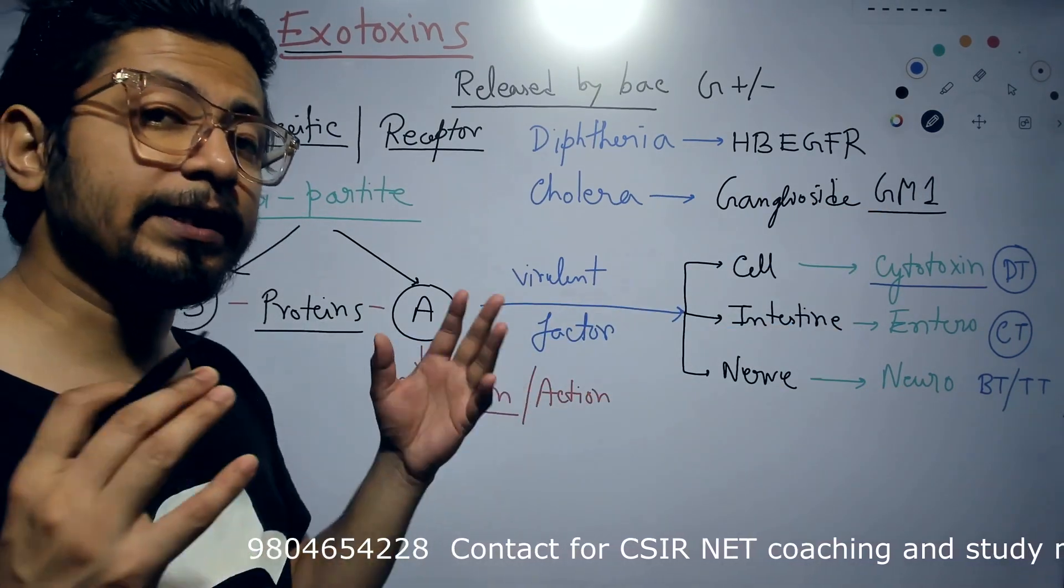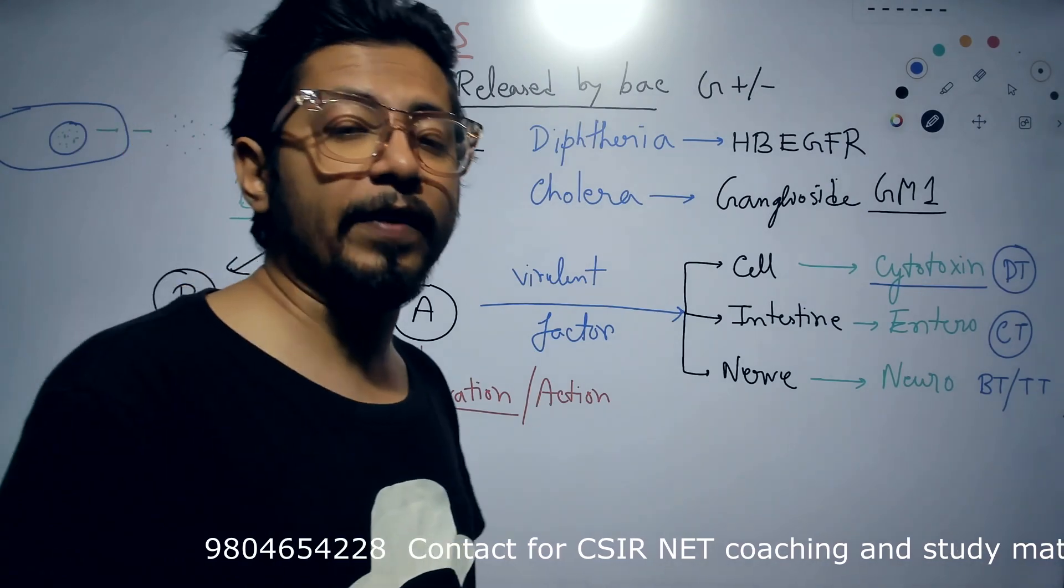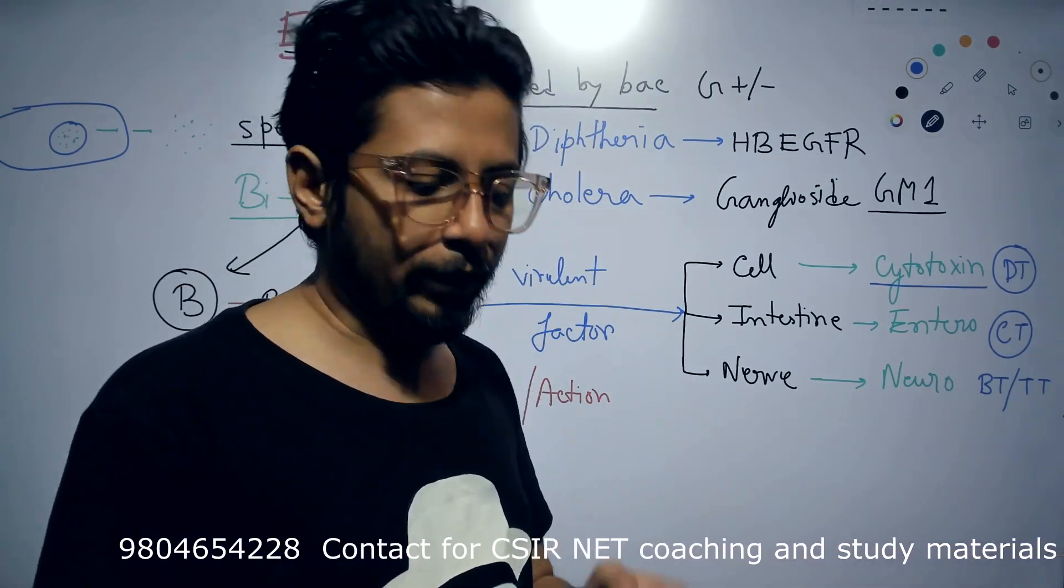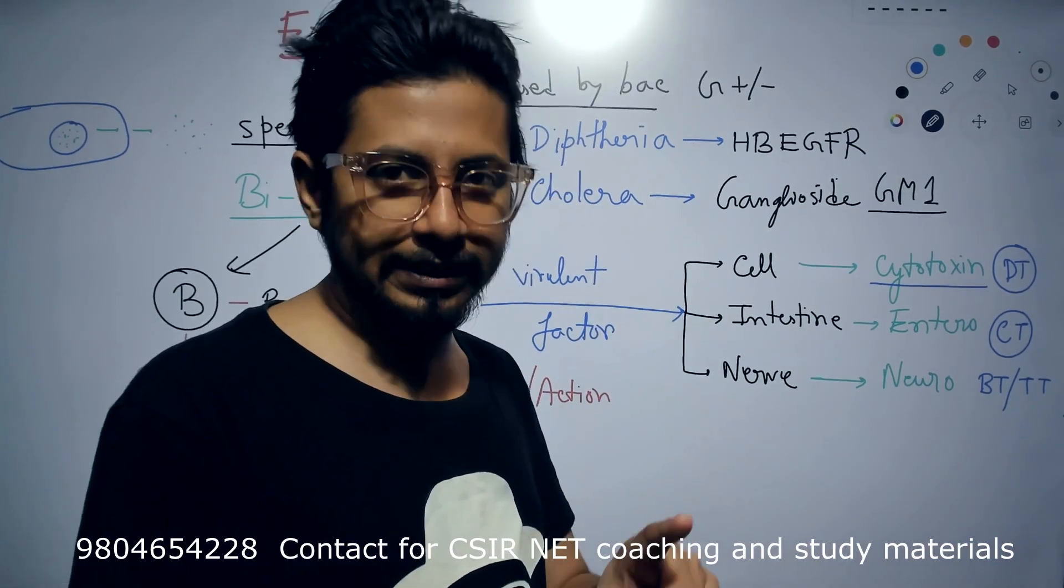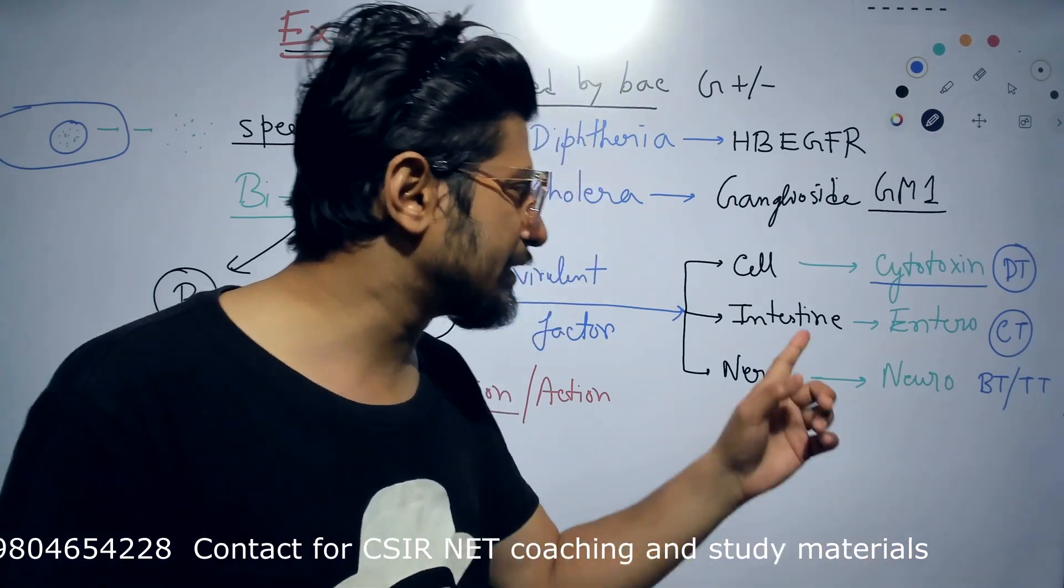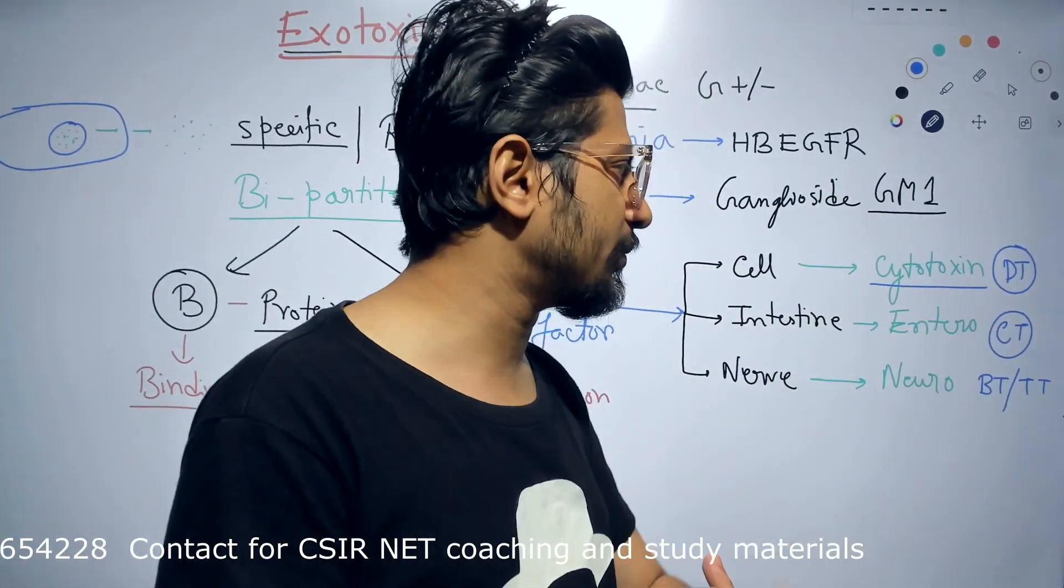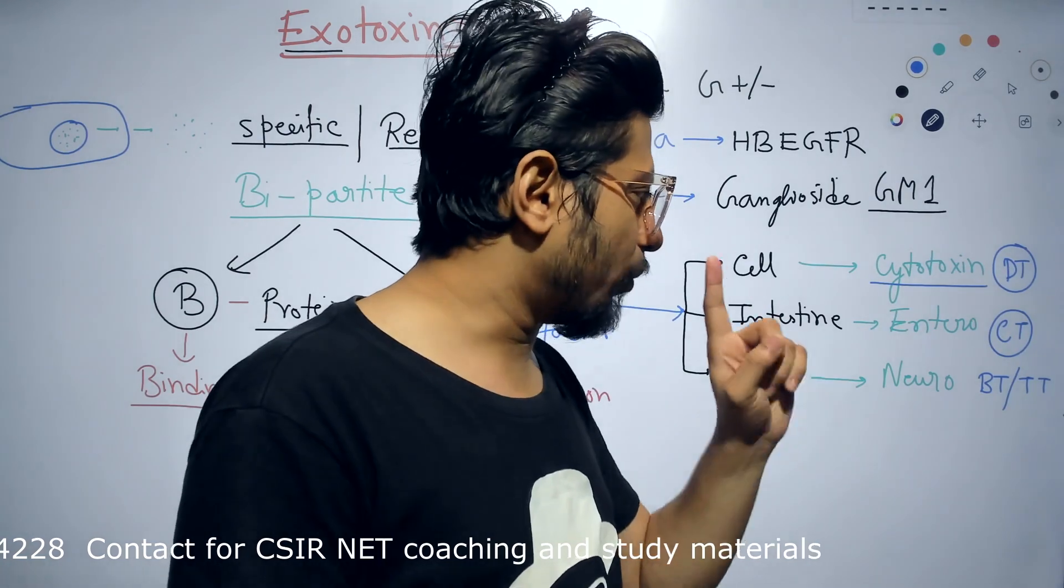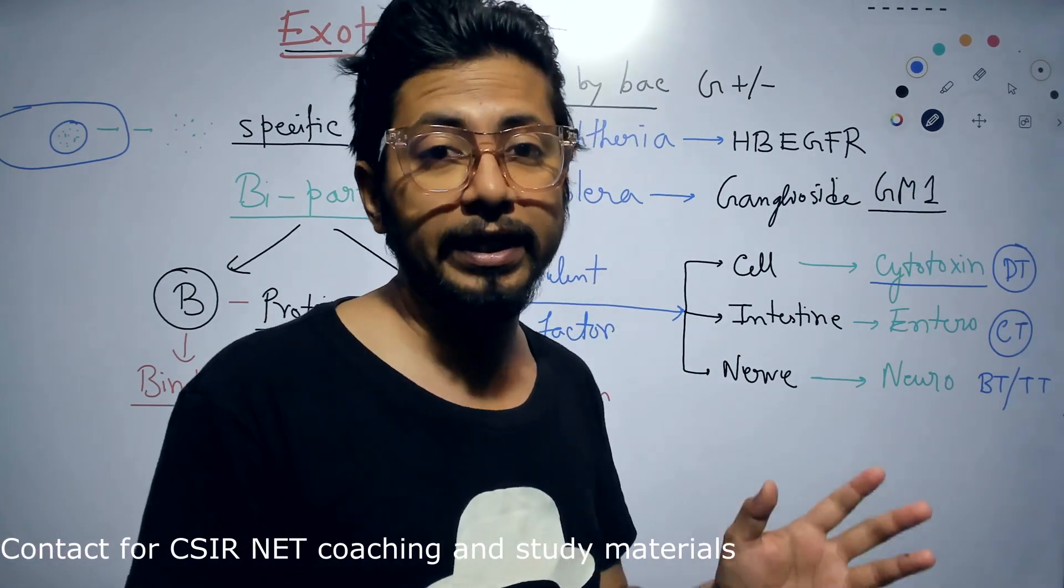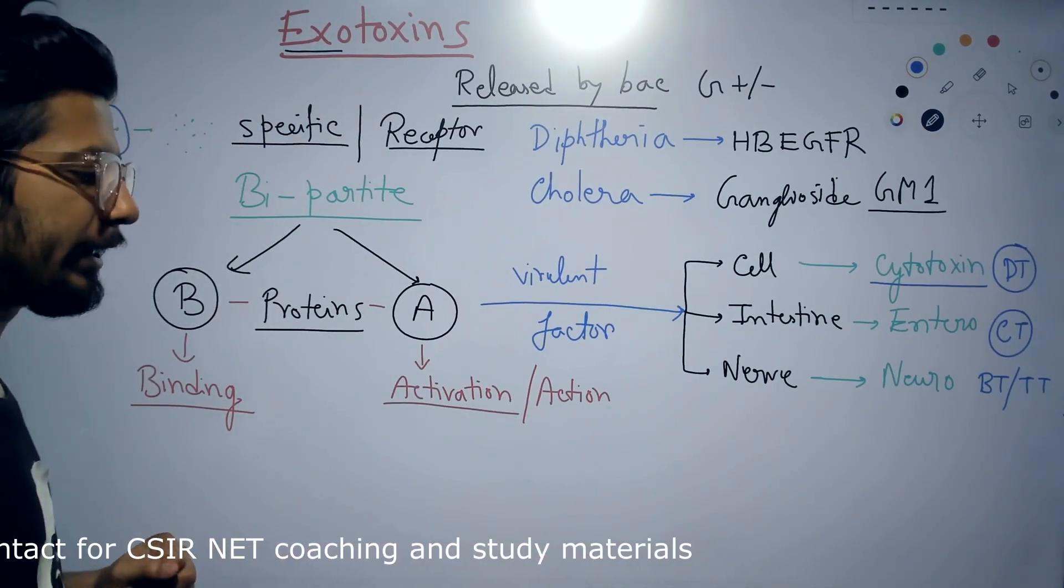These are the four different types of toxin and mechanisms of action that we need to understand. If you are in CSIR preparation, ICMR preparation or MBBS preparation, this is very important: diphtheria toxin mechanism of action, cholera toxin, botulinum toxin and tetanus toxin modes of action. We need to understand this very clearly.